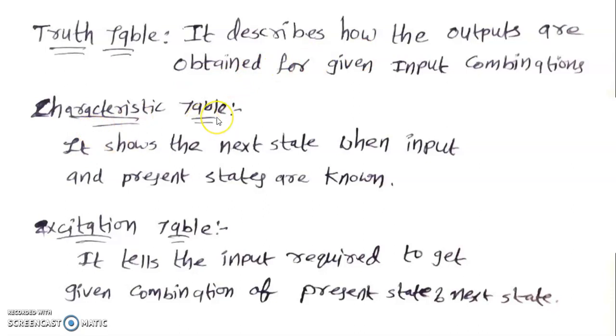Whereas, coming to the characteristic table, it gives the information about what is the next state based upon the input and the present states given. It shows the next state when input and present states are known.